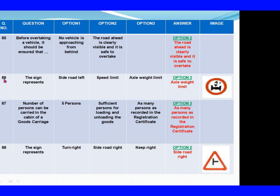Question 86: The sign represents. Option 1: Side road left. Option 2: Speed limit. Option 3: Axle weight limit. The right answer is Option 3: Axle weight limit. Question 87: The number of persons that can be carried in the cabin of a goods vehicle. Option 1: Option 2: Sufficient persons for loading and unloading the goods. Option 3: As many persons as recorded in the registration certificate. The right answer is Option 3: As many persons as recorded in the registration certificate.